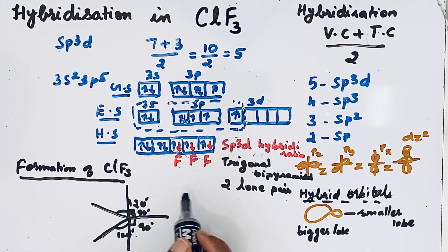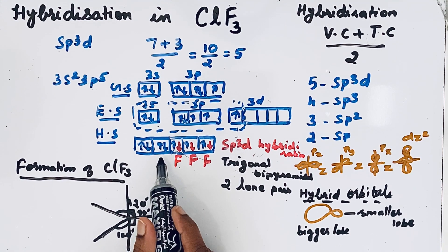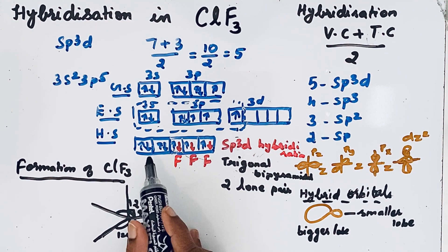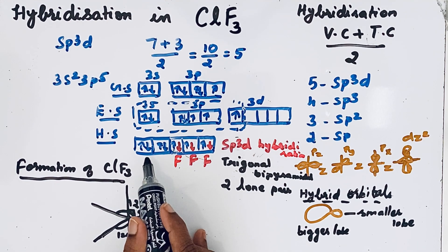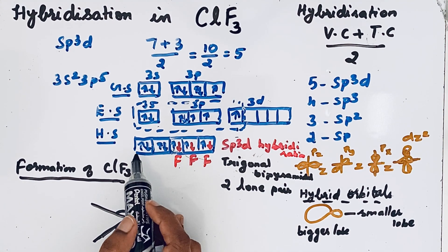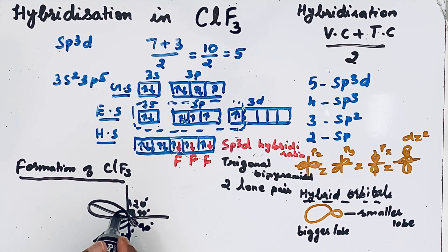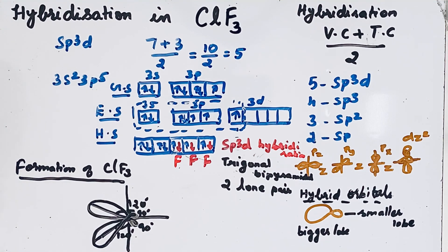We know that lone pair–lone pair repulsion is greater than bond pair–lone pair repulsion. To minimize repulsion, lone pairs always try to occupy the equatorial position. So hybrid orbitals with lone pairs take the equatorial position.